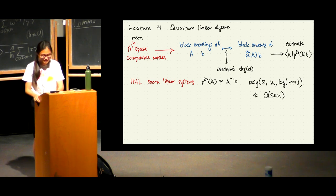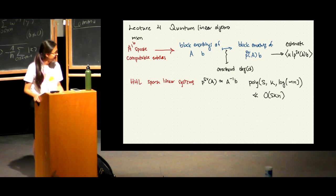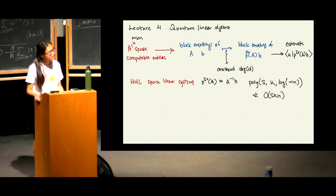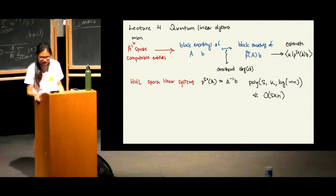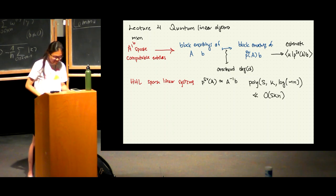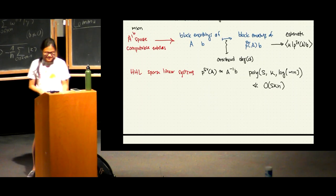Did they just do the Taylor series for 1 over x to do the polynomial approximation? For A inverse? I actually don't remember. Does anybody know what the polynomial is for the original HHL? They definitely wanted A inverse B and used some kind of Taylor series — they might have used a Fourier series, but I'm not sure. I'm talking about this as if block encodings already existed at the time, which is not the case.